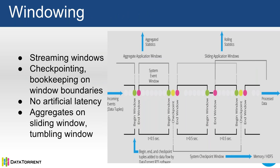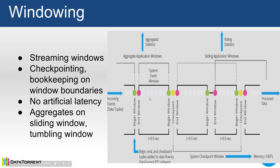An important concept is windowing. The incoming stream is continuous data and we chop it into windows by introducing control tuples as begin-window and end-window markers. By default the window size is 500 milliseconds but it is configurable. These windows are not micro-batches — when you receive a begin-window and the next tuple arrives, that tuple gets processed immediately and passed to the next operator without waiting for the end-window. In some micro-batching platforms the entire window has to wait until it completes; this is not the case with Apex, which is why we call it true streaming and not micro-batch.